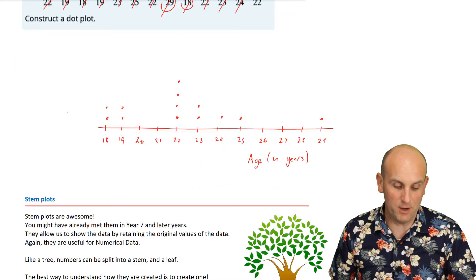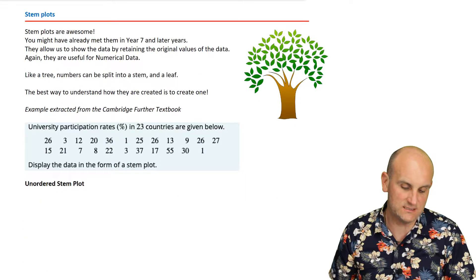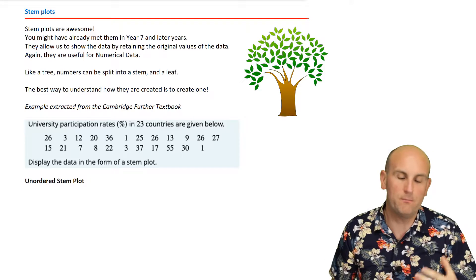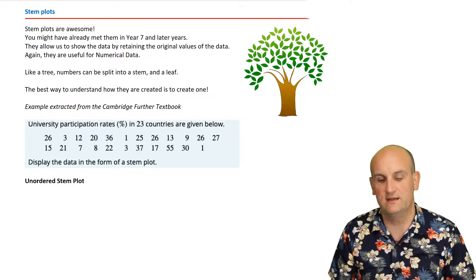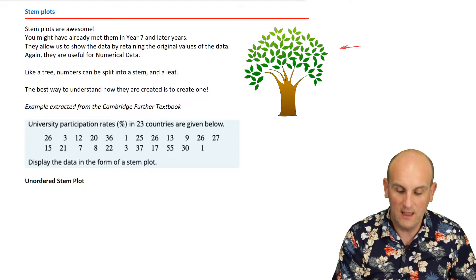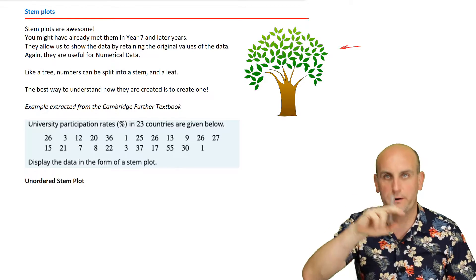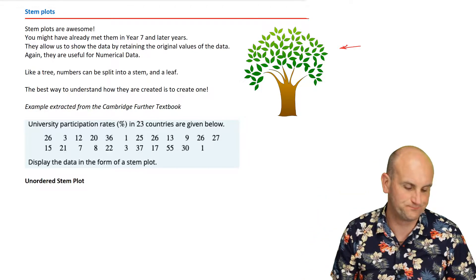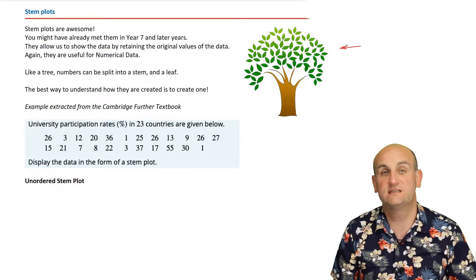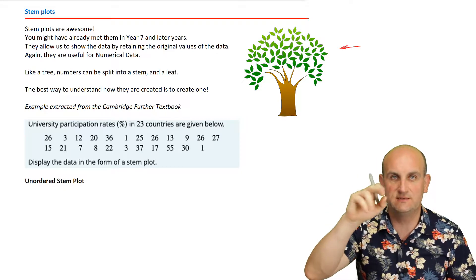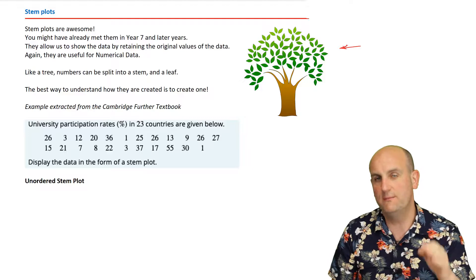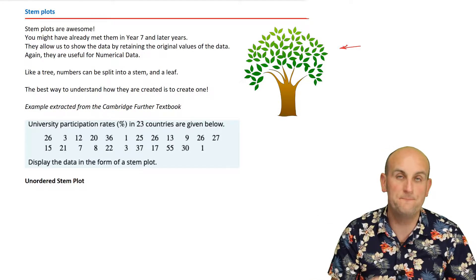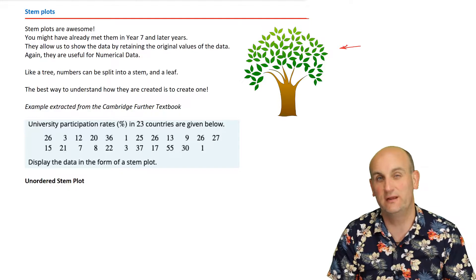Stem plots are awesome — I love these. If you look here, we have a tree, and what does a tree have? It has branches. Coming off the branches are leaves. Well, if we think of our branches as stems, we have the stems and the leaves. We can describe a list of numbers in terms of stems and leaves. The best way to do one is to actually create one.